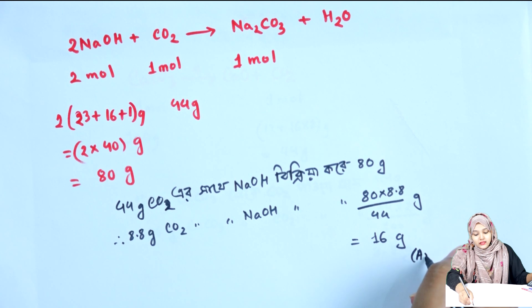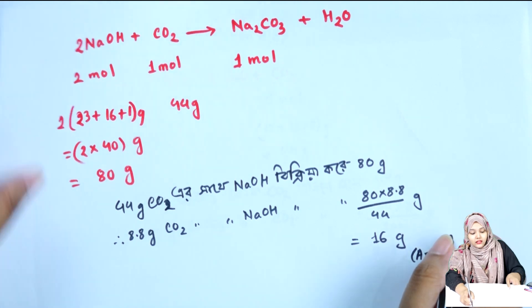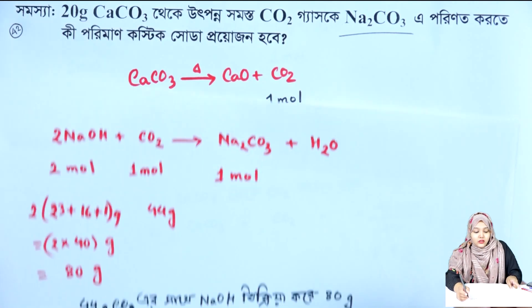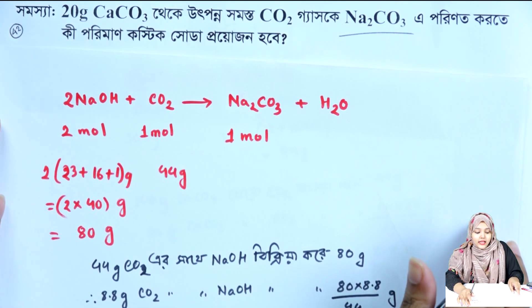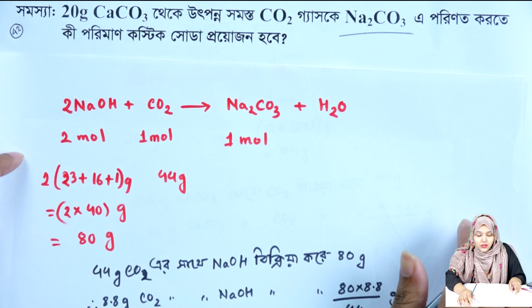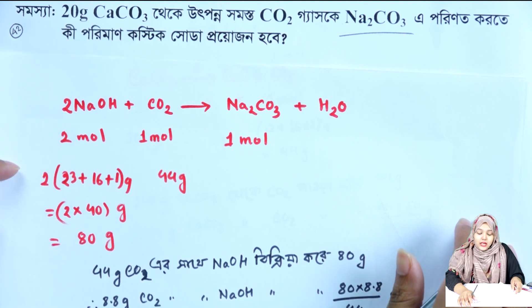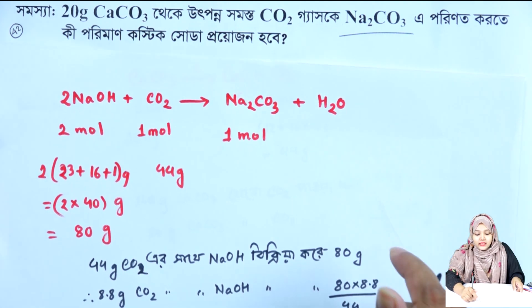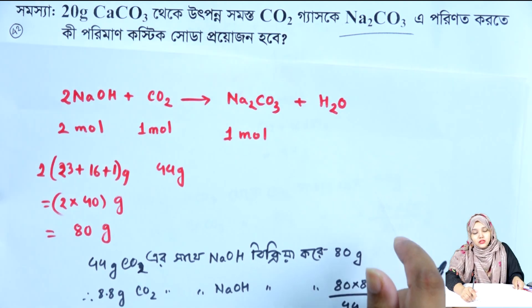The answer is 20g of carbon dioxide. 20g of carbon dioxide is the same carbon dioxide. Also noting 6g carbon dioxide and 18g carbon dioxide at different conditions.